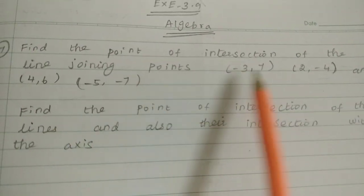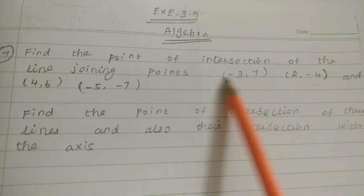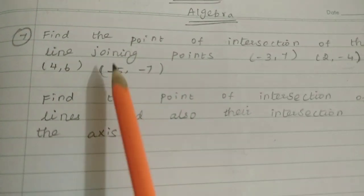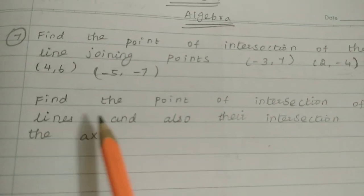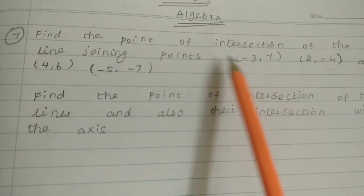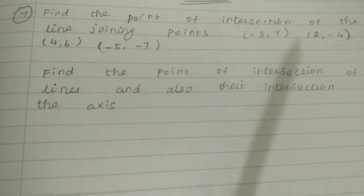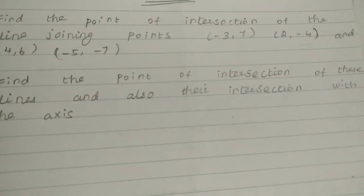How to find the point of intersection — we have 2 sets of points, that means 2 pairs. One set of points and one set of points. Find the point of intersection of these lines. This line and this line is the point of intersection, and also intersect with the axis.